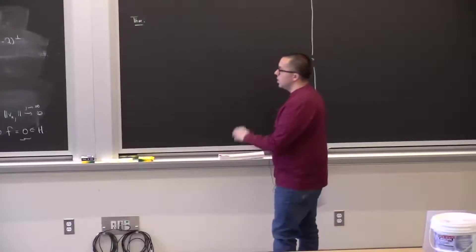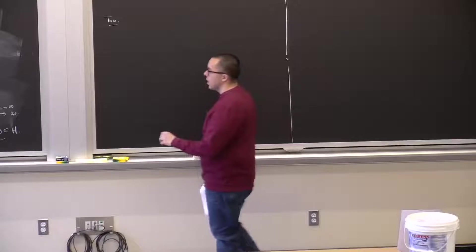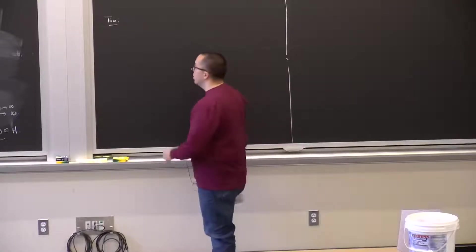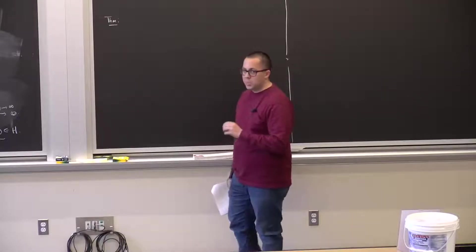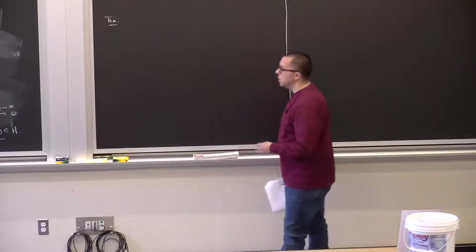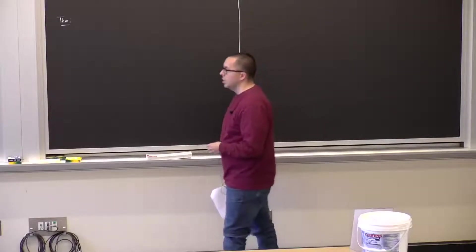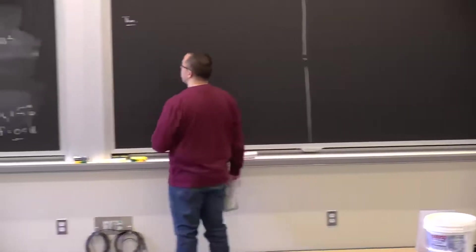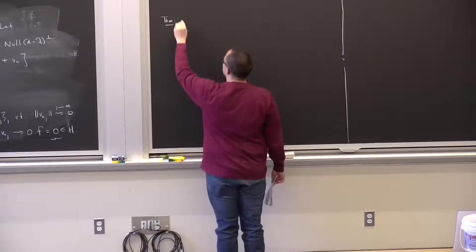This is a very powerful theorem. For a compact self-adjoint operator, the non-zero spectrum consists entirely of eigenvalues. Moreover, we proved earlier that ±‖A‖ is in the spectrum of a self-adjoint operator. Therefore, if A is a non-trivial compact self-adjoint operator, it has at least one eigenvalue.